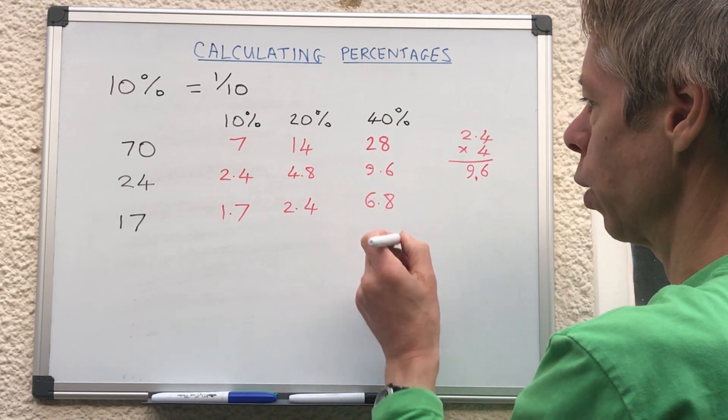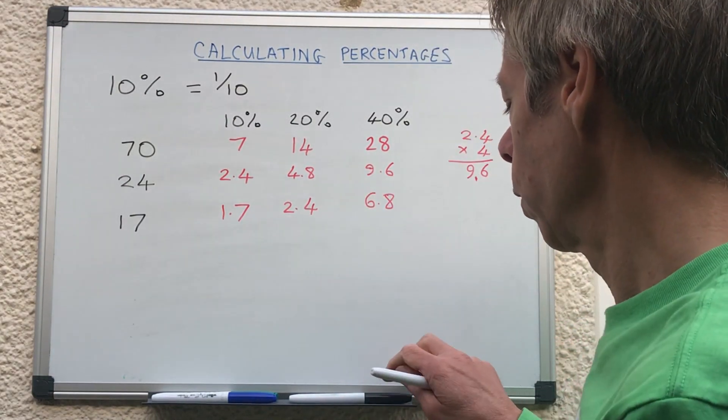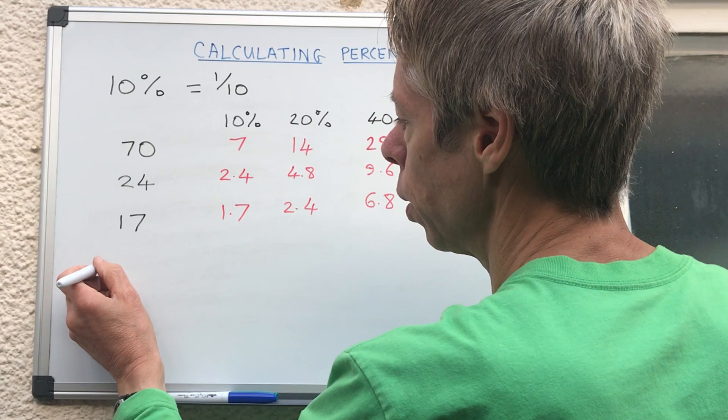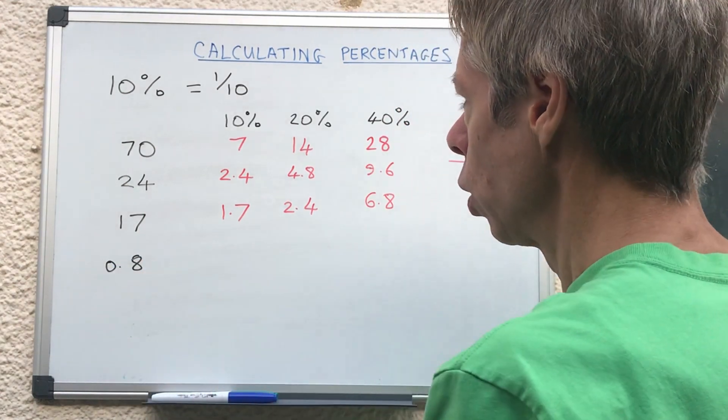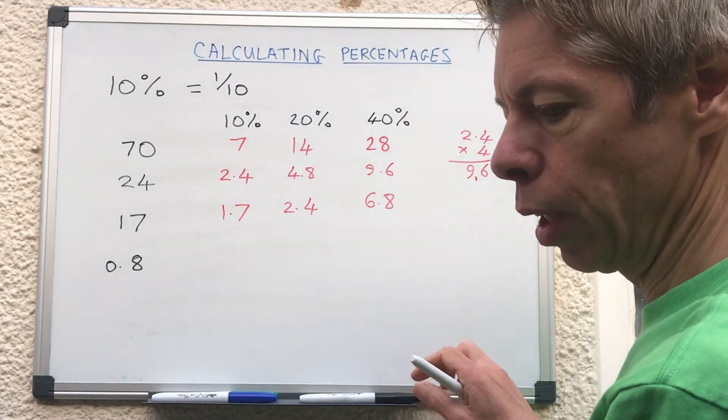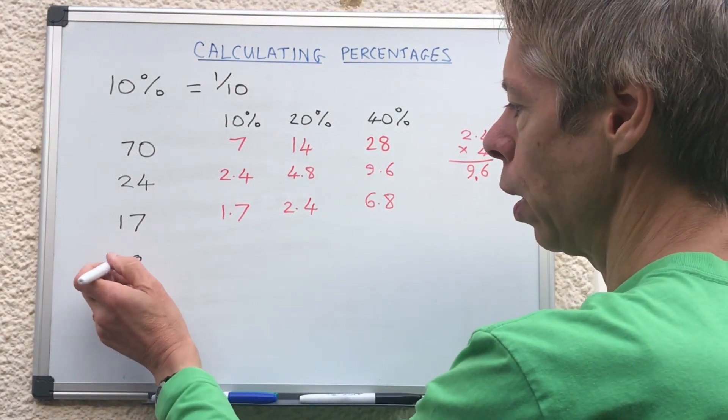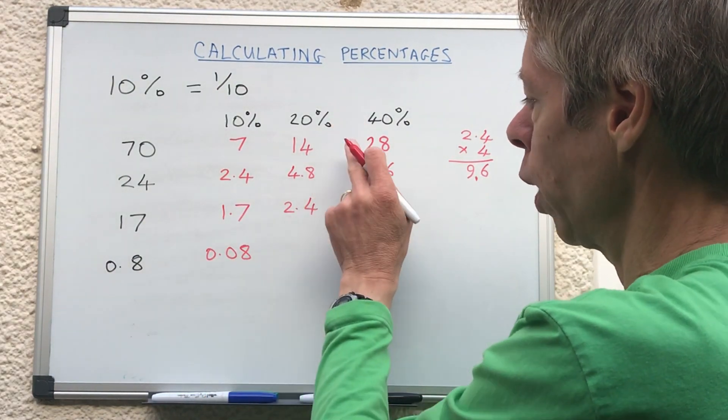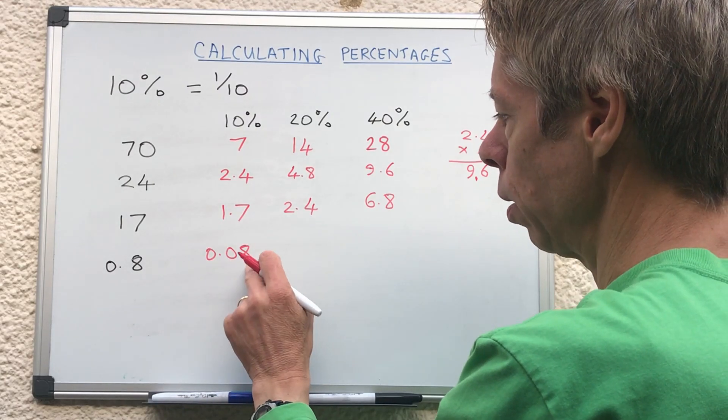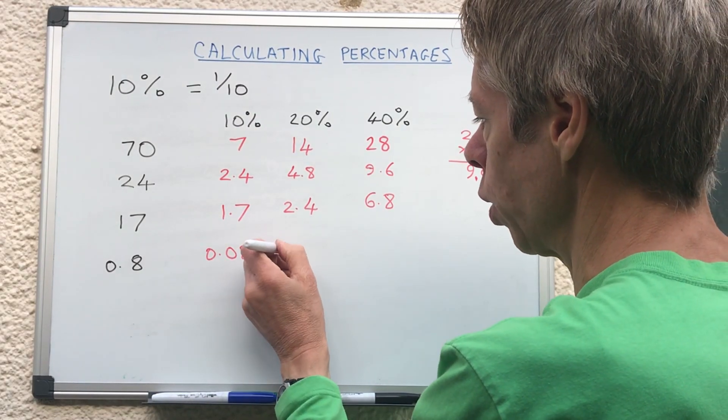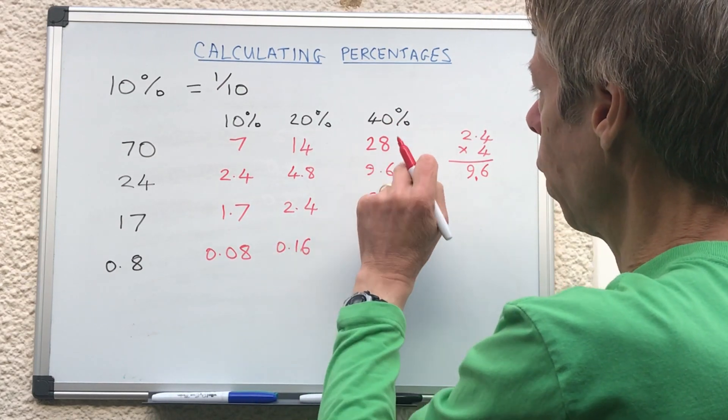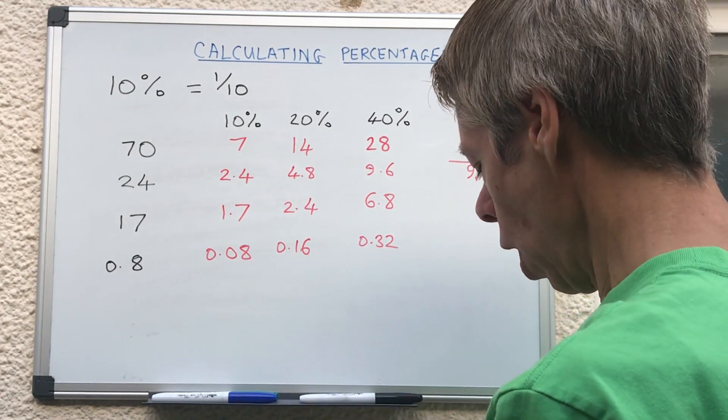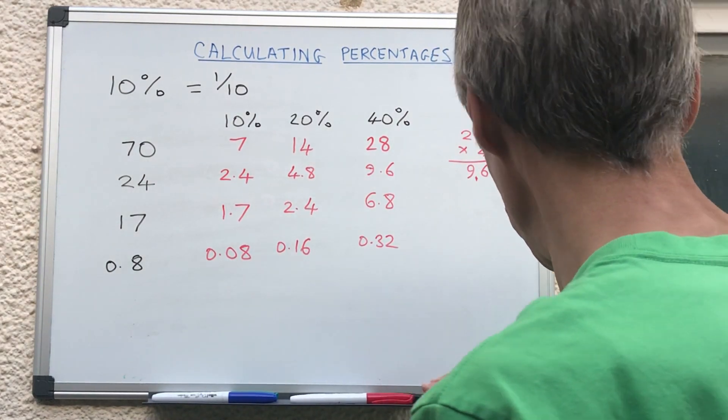Let's do one more, what if we had a decimal? So let's do 0.8. Ten percent of 0.8, we're going to divide it by 10, so we're going to slide in a zero to give us 0.08, that is our ten percent. So working out twenty percent is easy, double 8 is 16, so it was eight hundredths, now it's 16 hundredths which will be 0.16. If you want to know forty percent, 4 times 8 is 32, so that'll be 0.32.